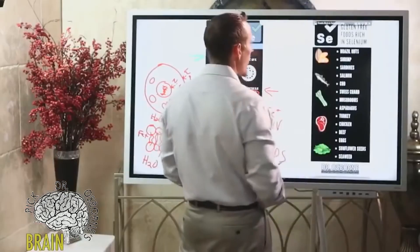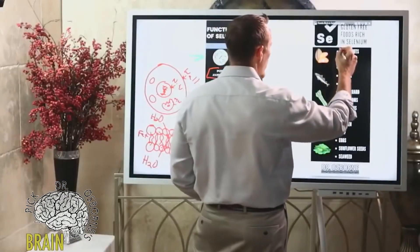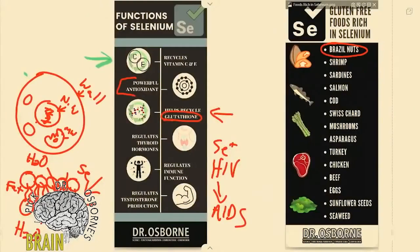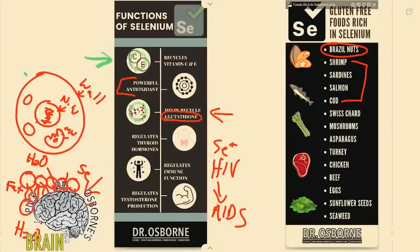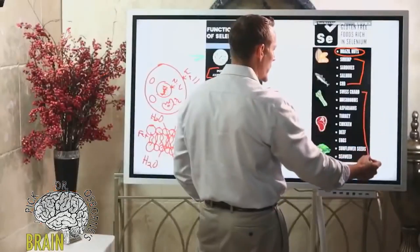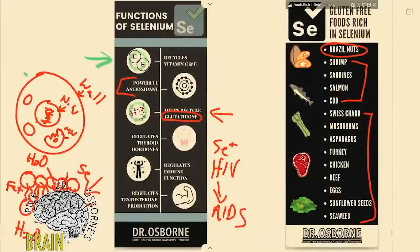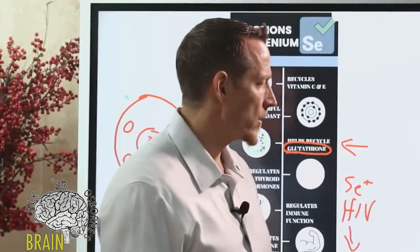Now how can we get more selenium in the diet? Probably the best way to do this is with Brazil nuts. Brazil nuts tend to be very rich in selenium. Your second best choice is seafood - you'll notice shrimp, sardine, salmon, and cod all at the top of this list, very rich in selenium. And then we have a variety of other high selenium foods down here as well.